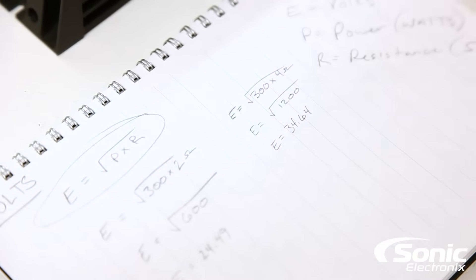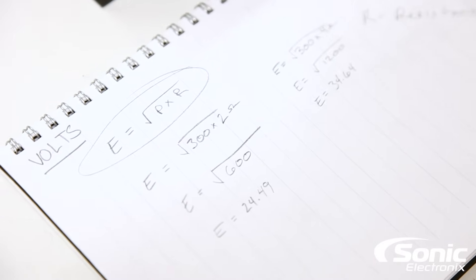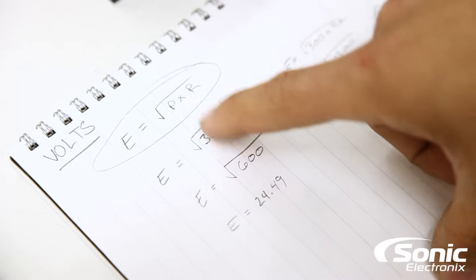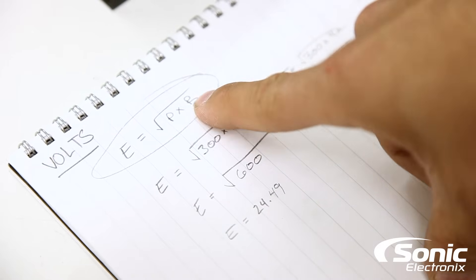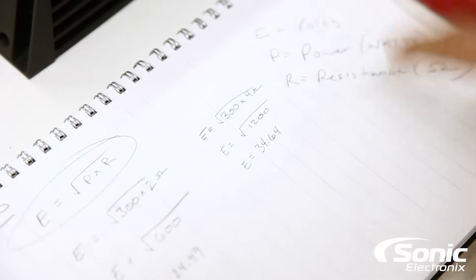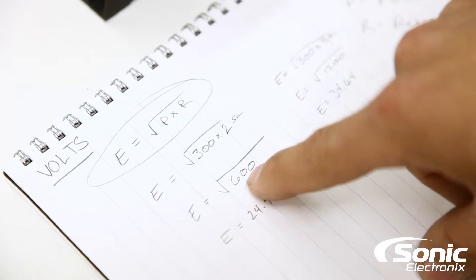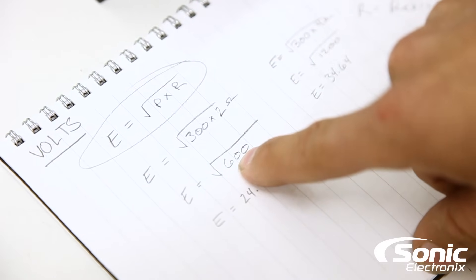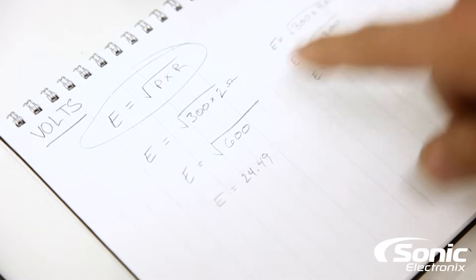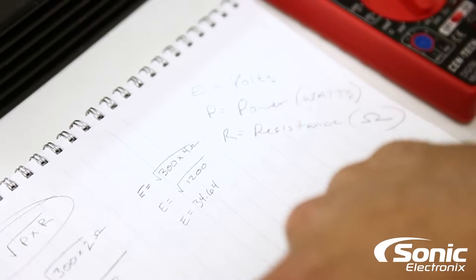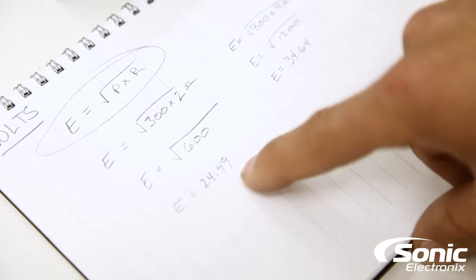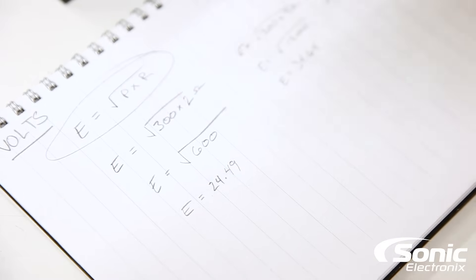So we've kind of went ahead and did some math for you and we're gonna show you how this works. So basically what you're gonna do: it's power times resistance—so power times resistance ohms. So 300 watts times 2 ohms gives us 600. The square root of 600 gives us our target voltage, which is 24.49.